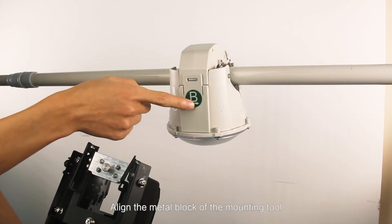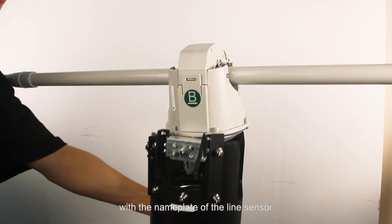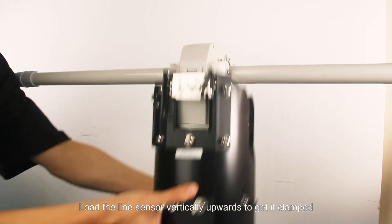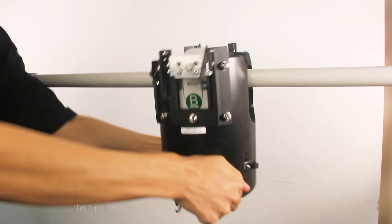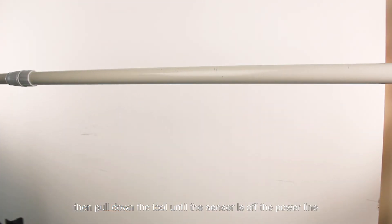Align the metal block of the mounting tool with the nameplate of the line sensor. Load the line sensor vertically upwards to get it clamped. Then pull down the tool until the sensor is off the power line.